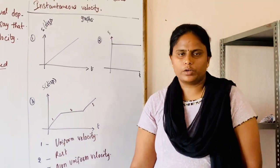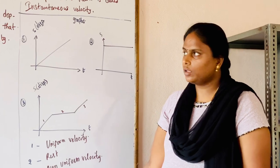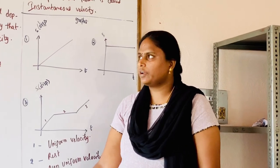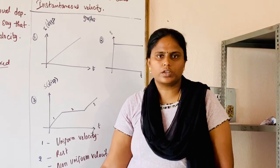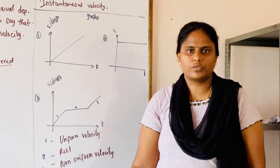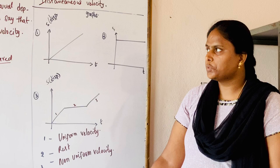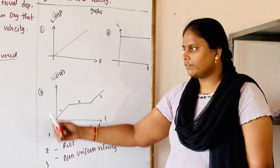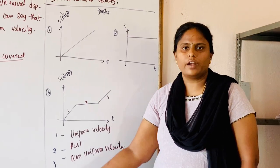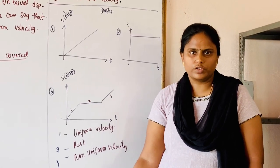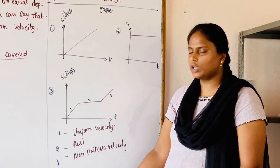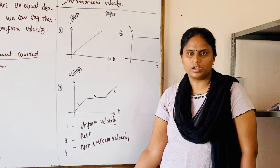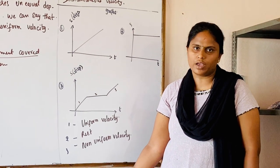This is all about the topic we have learned today — velocity, different kinds of velocity, dimensional formula, units, average velocity, the ratio between average speed and average velocity, and the graphs of different types of velocities.